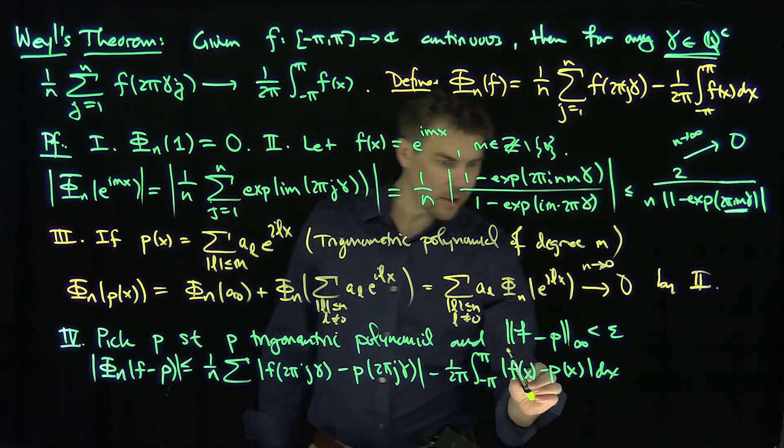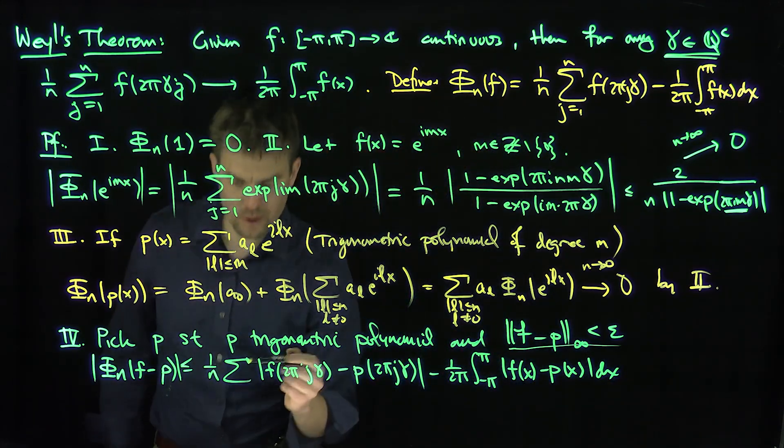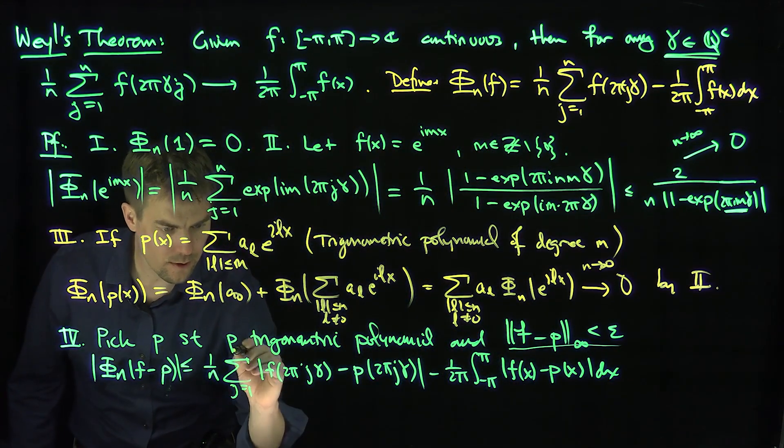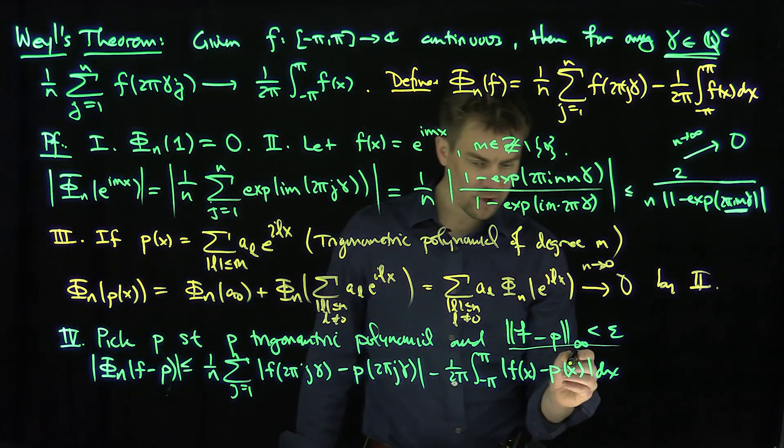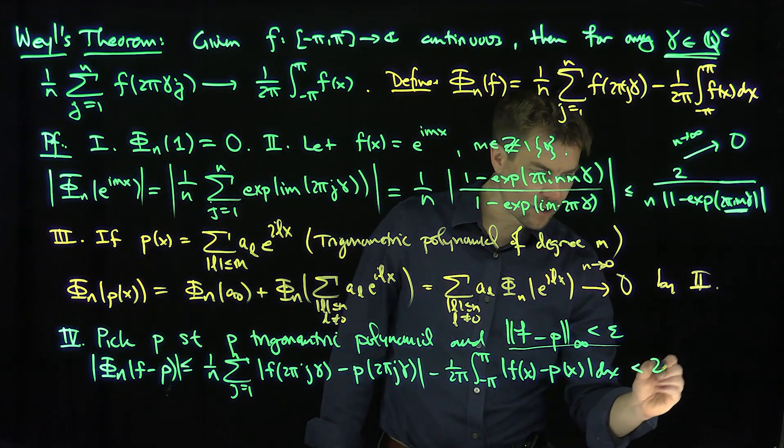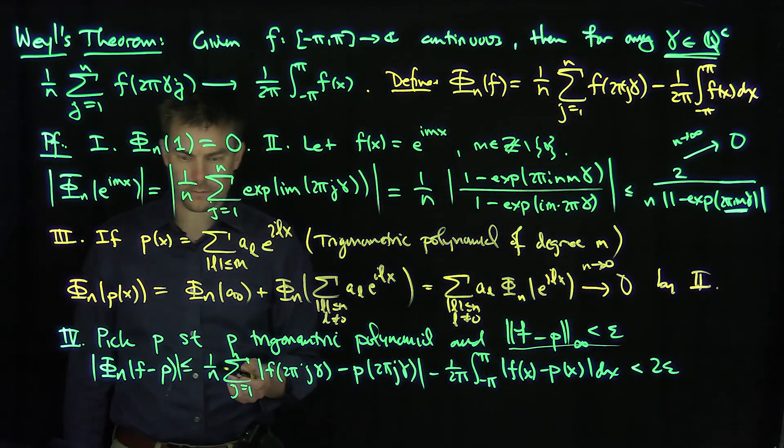Now by the fact that the L∞ norm is less than ε over here, these terms over here in my sum, j goes from 1 to n, are all less than ε, and these terms over here are all less than ε, so this is less than twice ε. Great.